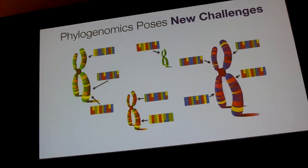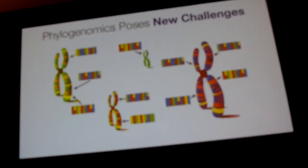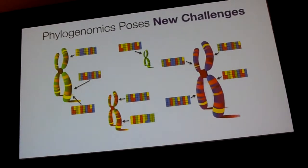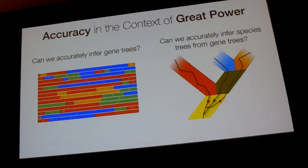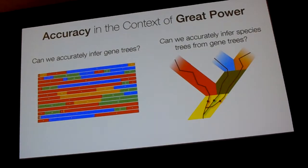We all know that phylogenomics poses new challenges, and many of these challenges relate to how we sample the genome with multiple collected data and how we deal with the scale of the data. But the sorts of challenges I'm going to talk about today have to do more with accuracy. Large data sets give us enormous power, and with enormous power comes a lot of precision, but precision does not always translate to accuracy. We are obsessed with trying to figure out how we can make sure that the answers we get back from phylogenomic analyses are right.